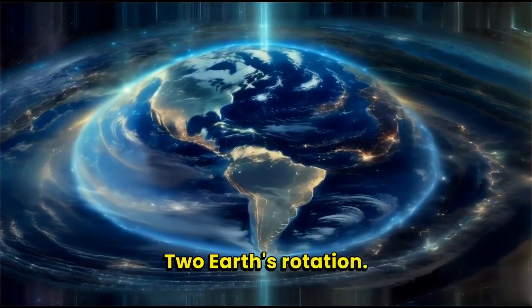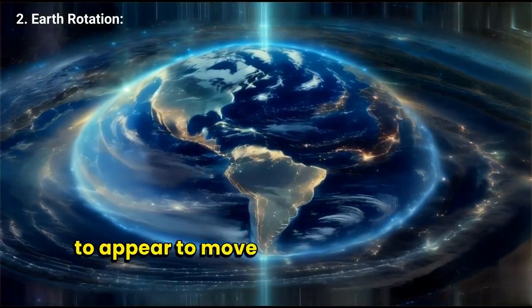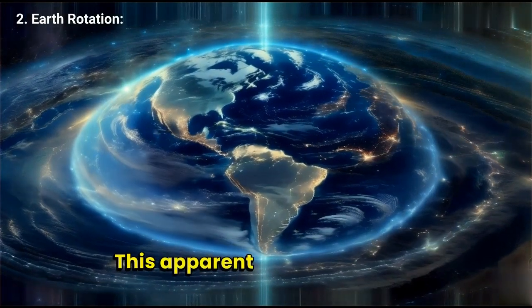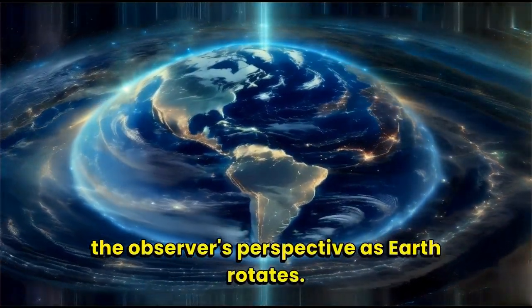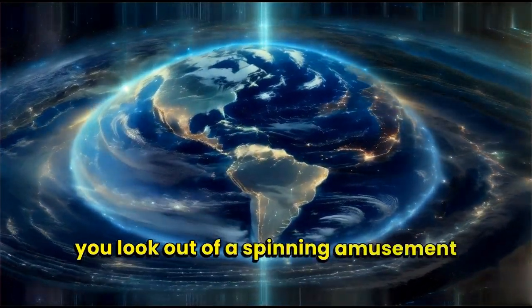2. Earth's rotation. The Earth's rotation on its axis causes the stars to appear to move across the sky from east to west over the course of a night. This apparent motion is due to the observer's perspective as Earth rotates. It's similar to how objects appear to move when you look out of a spinning amusement park ride.